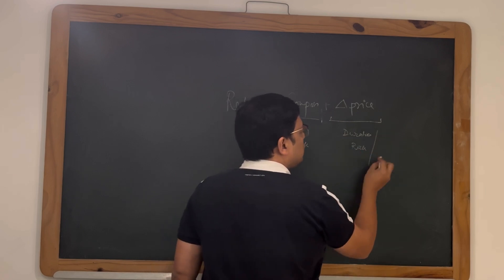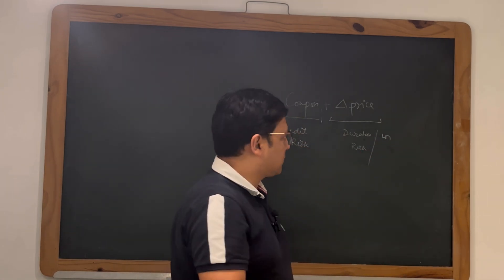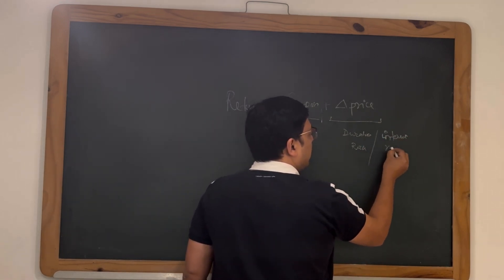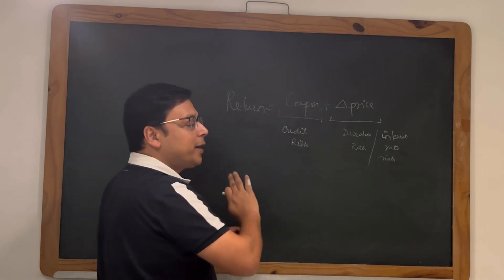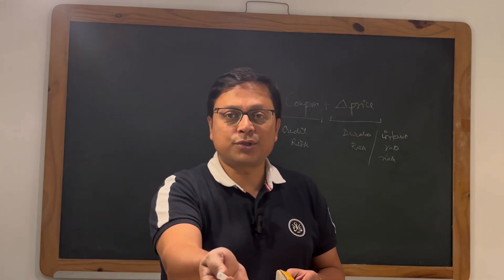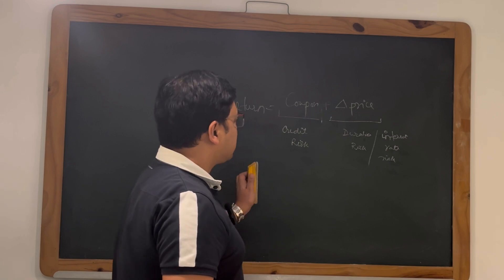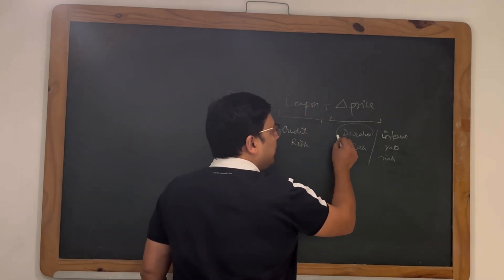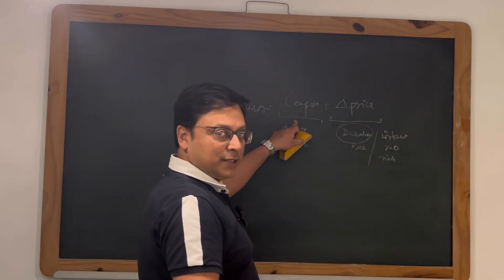Duration risk is also called interest rate risk. These are the two very important risk elements in fixed income. Since risk is the source of return, these are the two very important sources of return. As an investor, we look at both of them — today we will go deeper into duration risk.